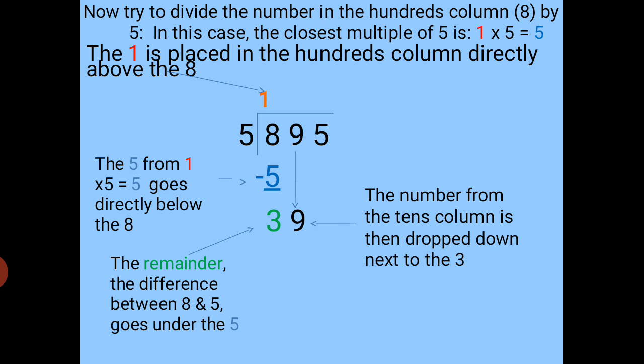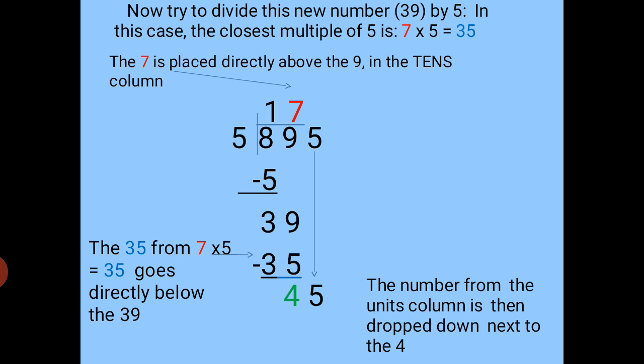The number from the tens column is then dropped down next to the 3, giving us 39. Now try to divide the new number 39 by 5. Since 39 is not exactly divisible by 5, we search for a number less than 39 and closest to 39. The closest multiple of 5 is 7 × 5 = 35. The 7 is placed directly above the 9 in the tens column. Now 39 minus 35 is 4, so we have 4 as the remainder. The 35 goes directly below 39.